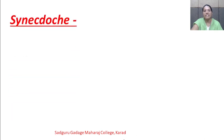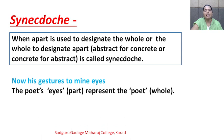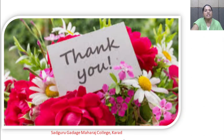The next poetic device is synecdoche. Synecdoche means when a part is used to designate the whole, or the whole to designate a part, or the abstract for the concrete, or the concrete for the abstract. Example: 'Now his gestures to mine eyes' — the poet's eyes, that is a body part, represent the poet as a whole person. These are some of the poetic devices from the poem. Thank you.